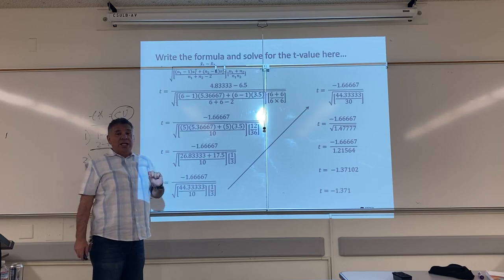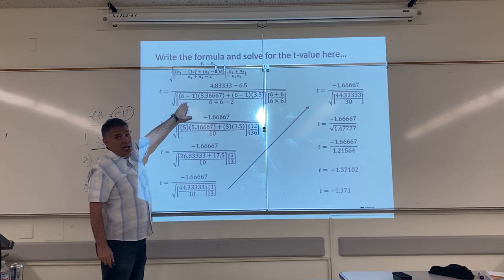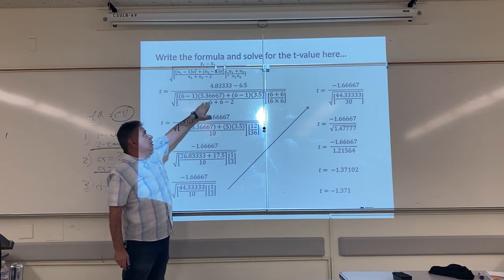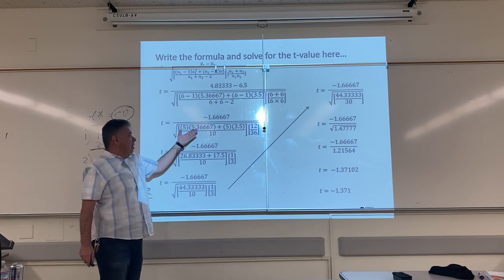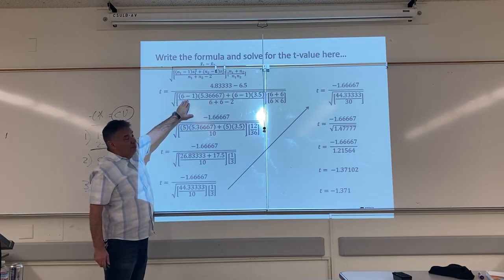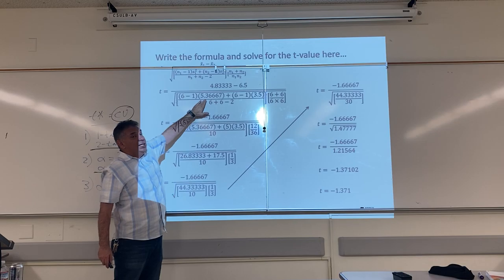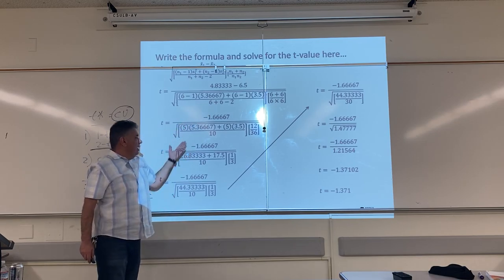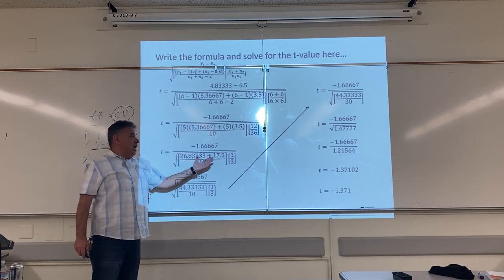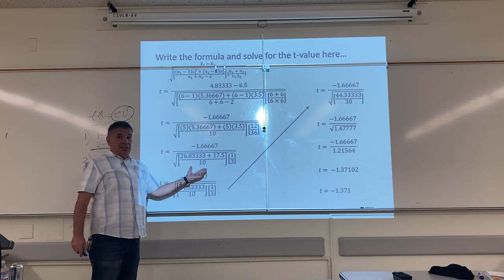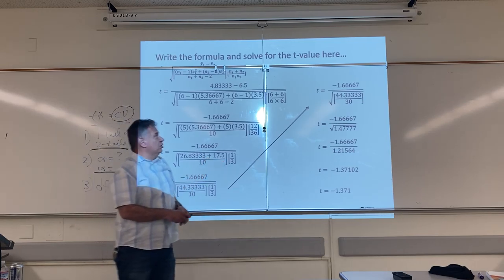Remember, if I did this correctly, when I multiply my degrees of freedom times my sum of the squares, what do I get? I'm sorry. When I multiply my degrees of freedom against the variance, what do I get? I get the sum of the squares back. Now look, I'm going to show you another little trick.